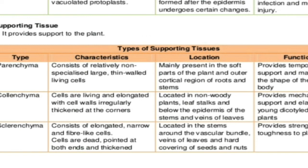Then we have collenchyma, which has living cells. These are elongated cells, and their corners have thickenings present, which provide a proportionate amount of flexibility along with rigidity. So it basically maintains mechanical strength, with a balance between elasticity and rigidity — such that the stem may bend but will not break, and returns to its original position.